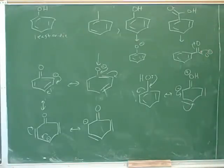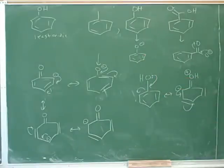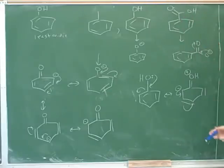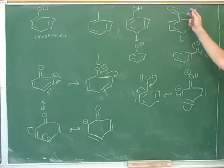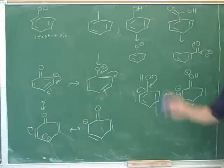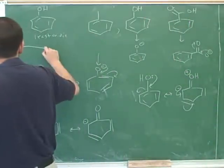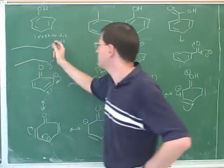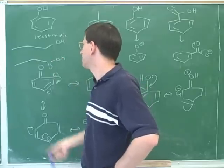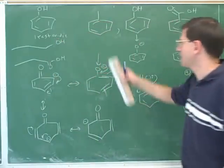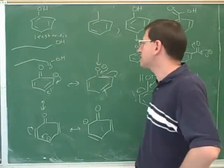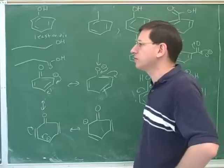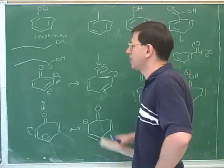You can't just count resonance structures because some count for more than others - a resonance structure where the negative charge is happier is more helpful. This is our general explanation for why carboxylic acid hydroxy groups are more acidic than alcohol hydroxy groups. Even if there were no benzene ring, we'd expect a carboxylic acid to be more acidic than an alcohol because the carboxylate's negative charge is stabilized by resonance, while the alkoxide has none. Drawing resonance structures is a good habit to help think through the problem.